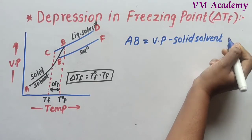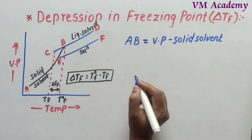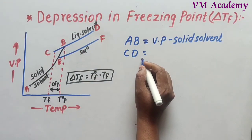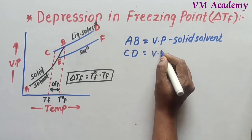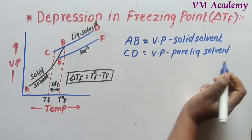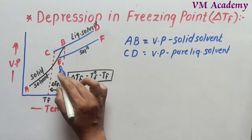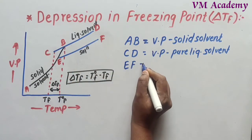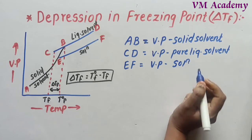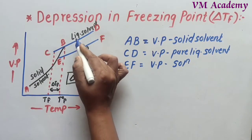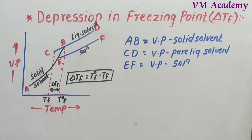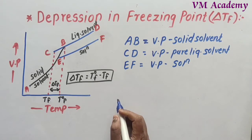The second curve is CD — this is the vapor pressure curve for the pure liquid solvent. The third curve is EF — this is the vapor pressure curve for the solution. The solution curve EF lies below the vapor pressure curve of the pure liquid solvent CD. So the EF curve is below the pure solvent curve.